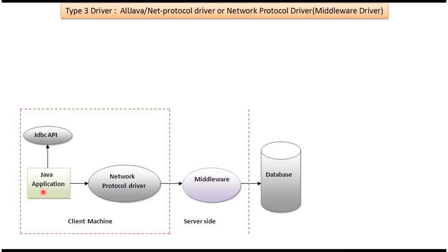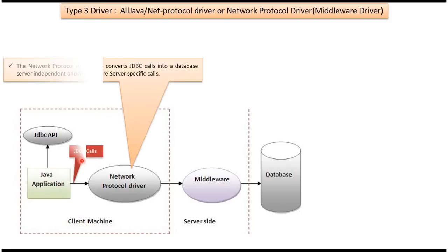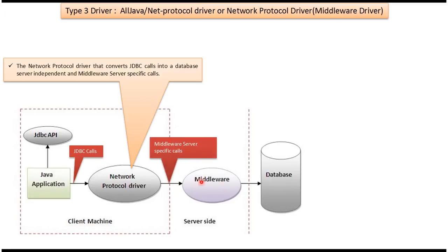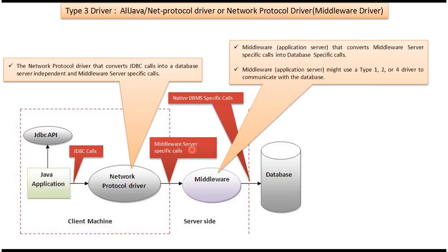Here you can see the Java application which uses JDBC API. This Java application will send JDBC calls to the Network Protocol driver. What this Network Protocol driver will do is convert these JDBC calls to Middleware server specific calls. Once the Middleware receives these calls, it will convert them to database specific calls. To communicate with the database, this Middleware server might use Type 1 driver, Type 2 driver, or Type 4 driver.